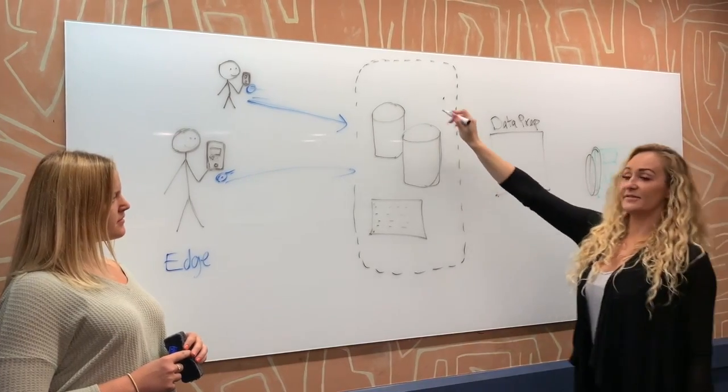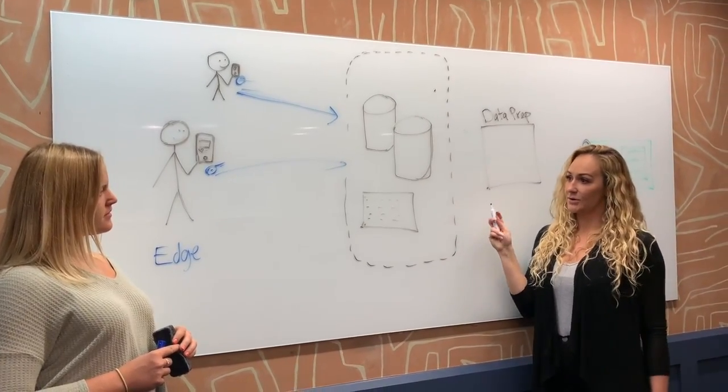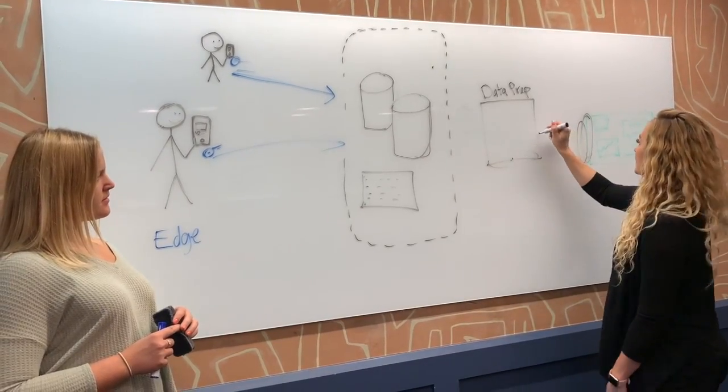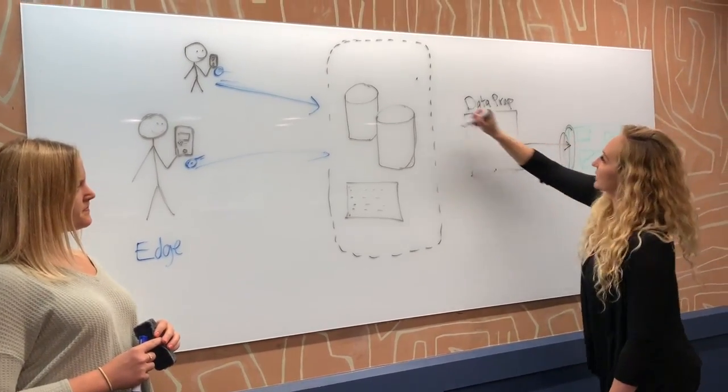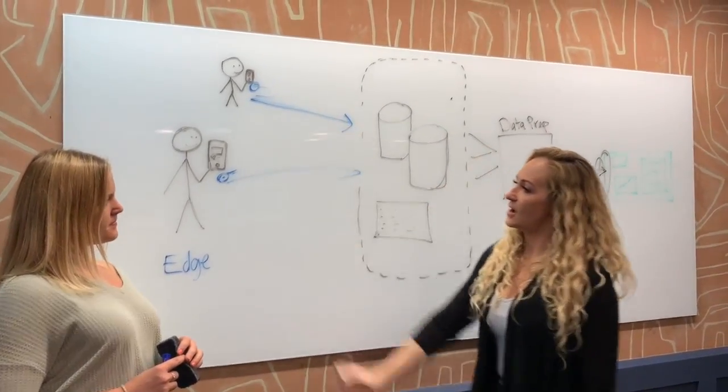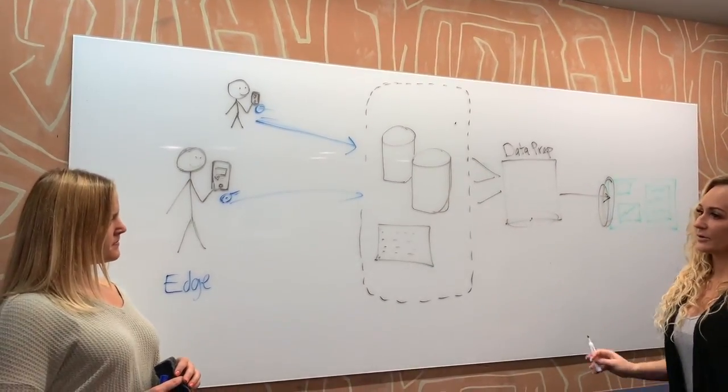So then you bring all of this data into a data prep tool and that takes the bulk of the work. So then there's only one source going here. So you can do all these sources here. So to your point, now processing is being done on the device before it's ingested.